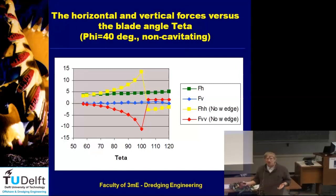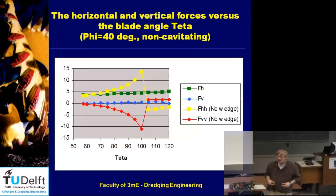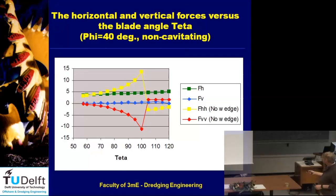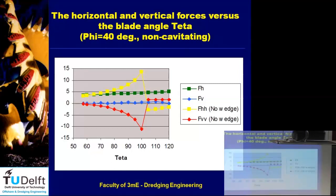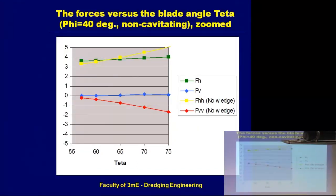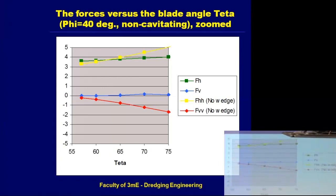If the force is the green line, it's limited — I just have to ensure the weight of the clamshell is bigger than this upward force. Once I know this upward force, I can add steel weight to the clamshell. For the vertical force, you can see that at 60 degrees it's almost zero, and the blue line — vertical force in case of a wedge — is also almost zero, so apparently there is not much vertical force.